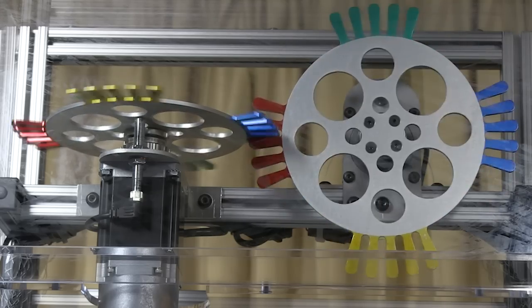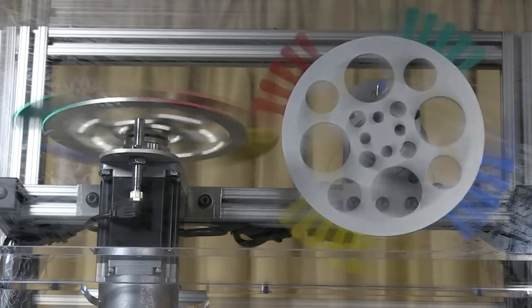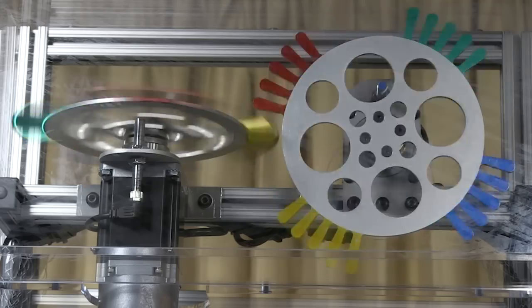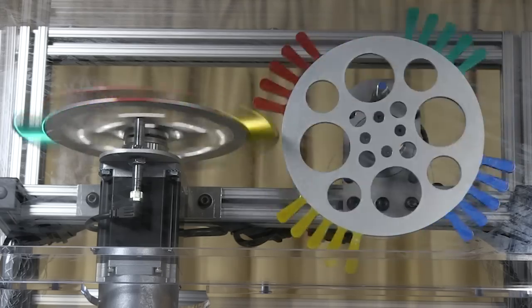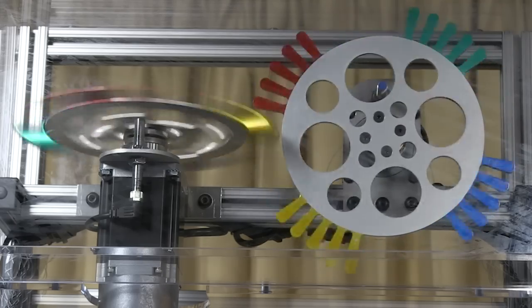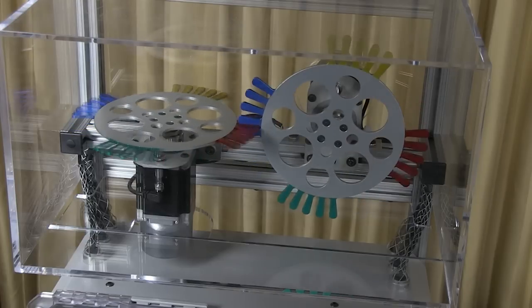And finally to profile number four, where the horizontal wheel spins continuously while the vertical disc knifes a group of five fingers through one of the larger openings on the horizontal wheel, all on the fly.